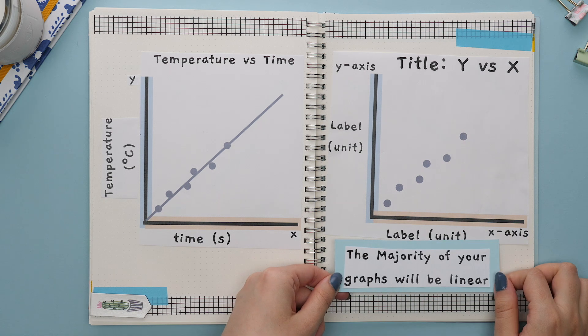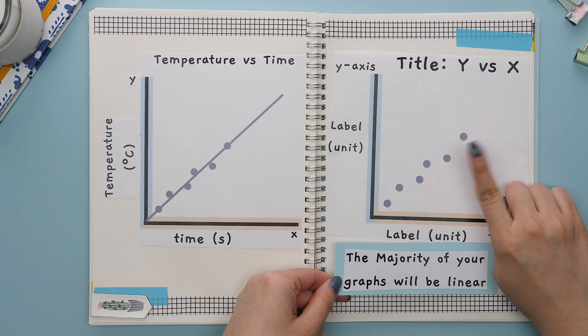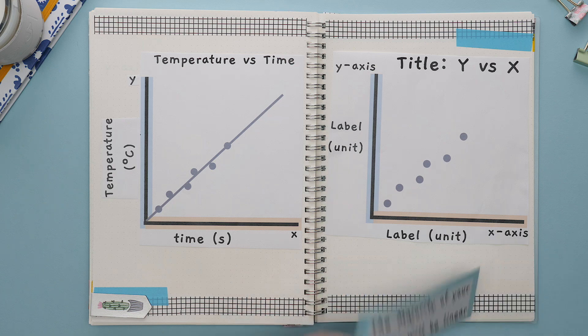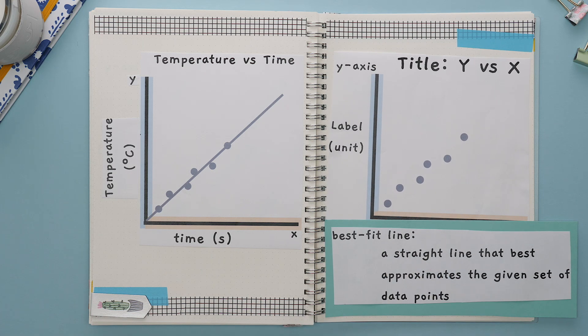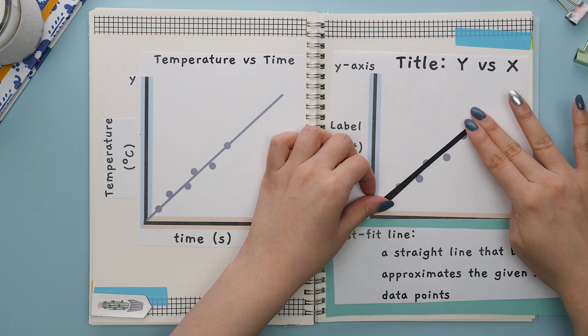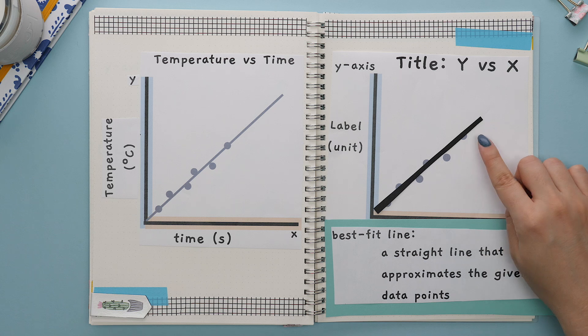The majority of your graphs will be linear and you'll notice that your data points won't perfectly align to form a perfect line. This is why we use something known as the best fit line, which is a straight line that best approximates the given set of data points. This line may pass through some of the points, none of the points, or all of the points.